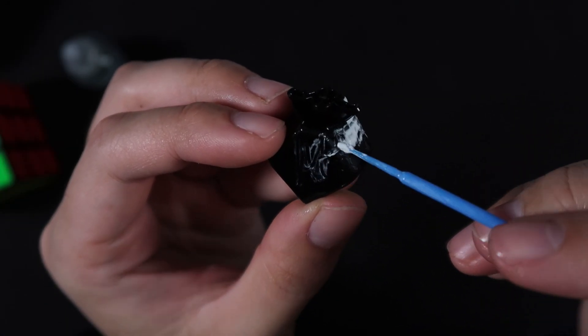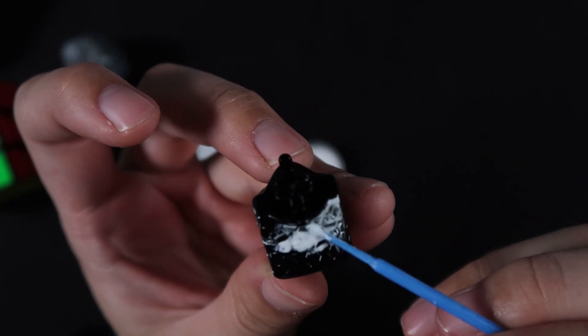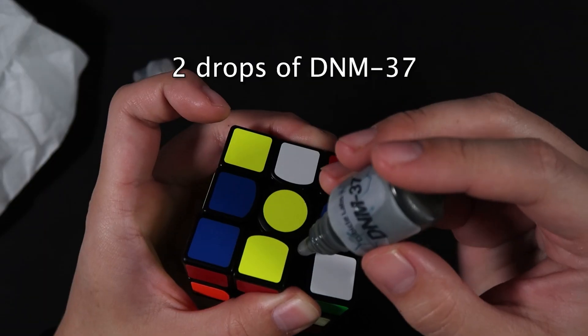Finally, just to bring back the speed a little, I did add two drops of DNM 37. In hindsight, it probably wasn't needed. In fact, I could have probably gone the opposite direction and used a couple drops of Compound 10.